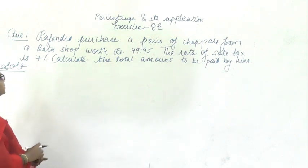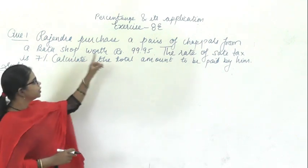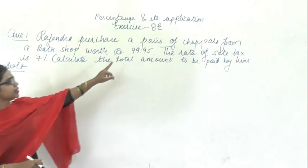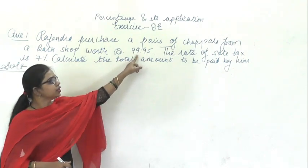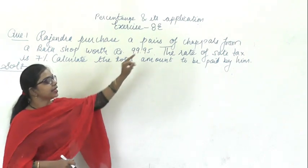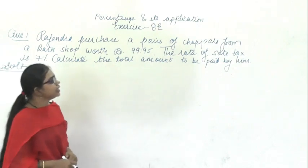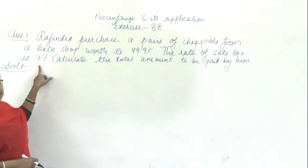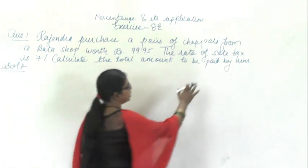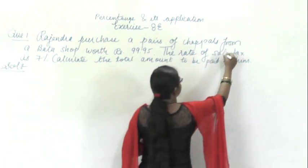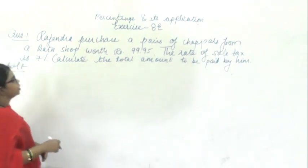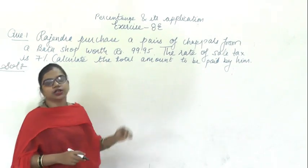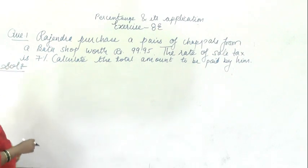The first question is: Rajen purchased a pair of chappals from a Bata shop. The cost of the chappals is 99.95 rupees. The rate of sale tax is 7%. You have to calculate the total amount to be paid by him.